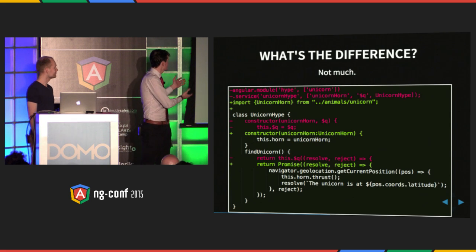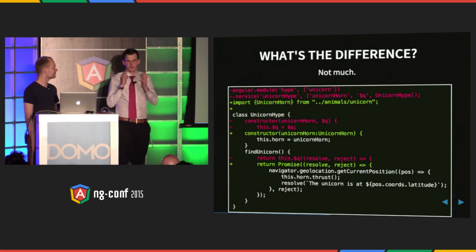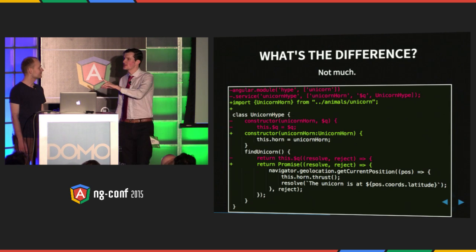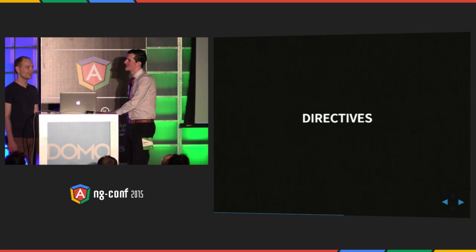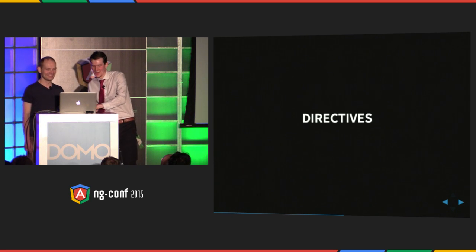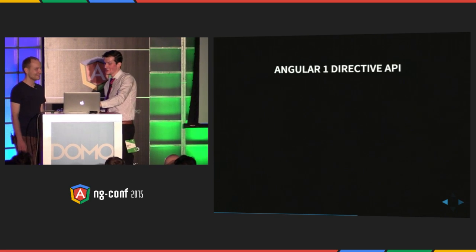A service is mostly business logic, so there's really not that much Angular in a service besides the dependency injection. But can you convert a directive from Angular 1 to Angular 2? Because the Angular 1 Directive API is disappearing on the slides — did the server stop?